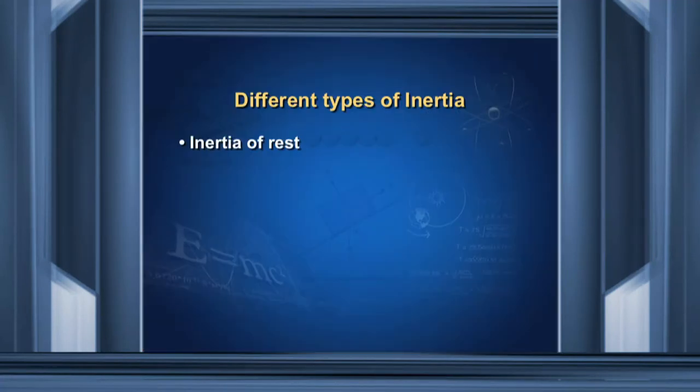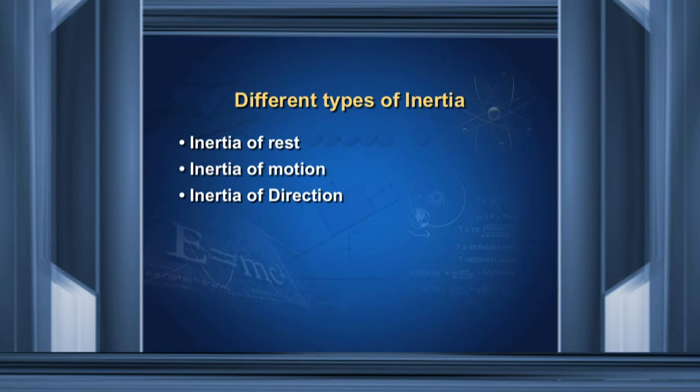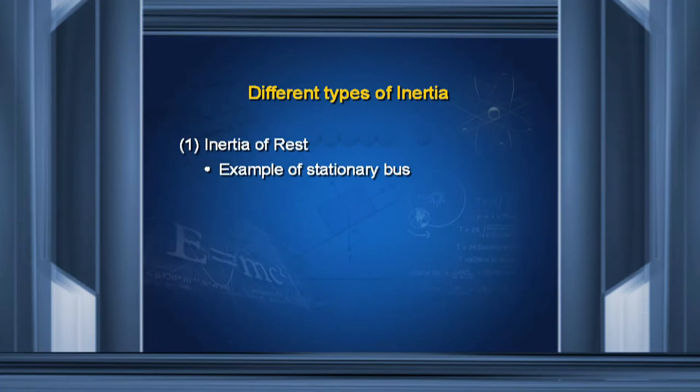There are three types of inertia. Number one: inertia of rest. It states that if an object is at rest, it remains at rest. For example, if you are sitting in a bus and the driver suddenly moves the bus, your lower body — in contact with the bus — remains at rest initially, but when the bus moves forward, your upper body, which was also at rest, remains at rest. As a result, you move in the backward direction.